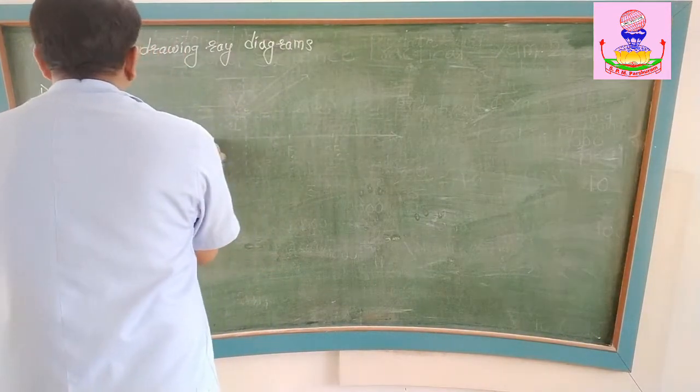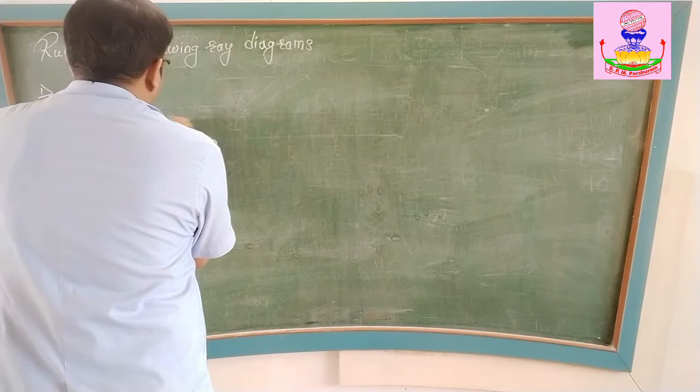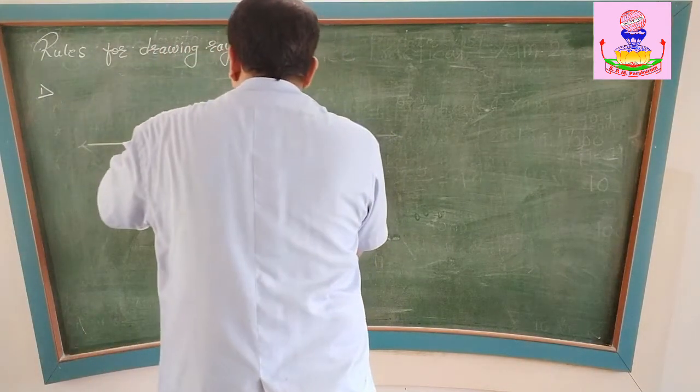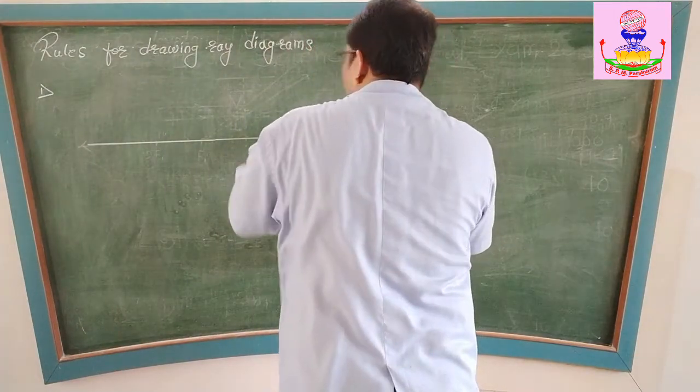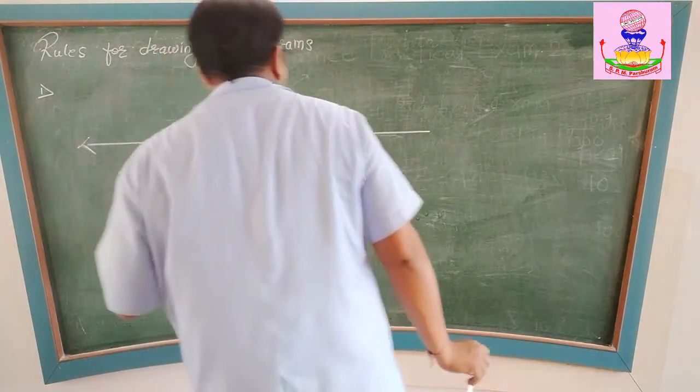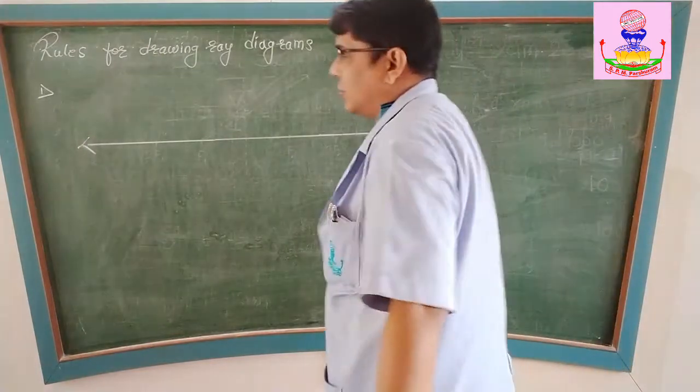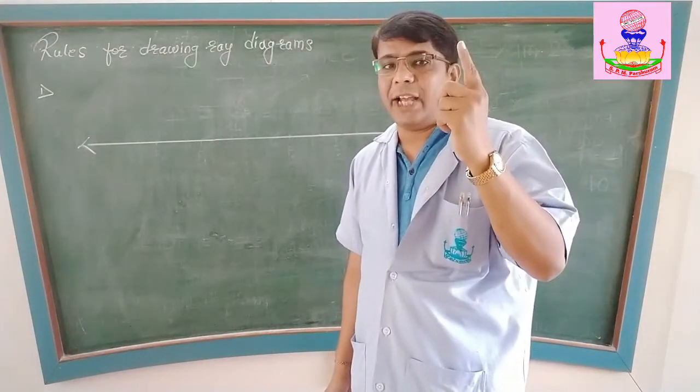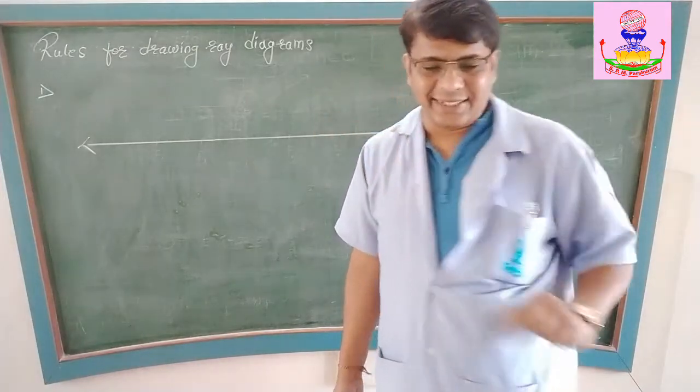Now using these rules, we are going to draw the ray diagrams for various positions of the object. There are infinite number of rays of light, so which rays are we going to use? We have selected these three rays. First ray of light which is parallel to the principal axis.